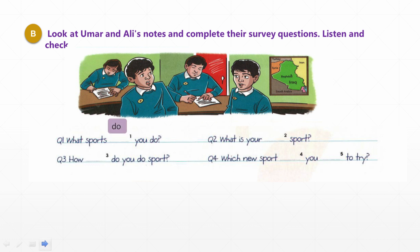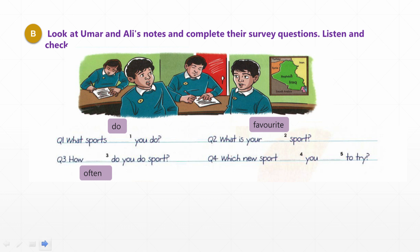Now look at Omar and Ali's notes and complete their survey questions. In number one, we write: 'What sports do you do?' Question two has a blank before the word 'sport', so: 'What is your favorite sport?' Question three starts with 'how' — how often, meaning the number of times — so: 'How often do you do sport?'